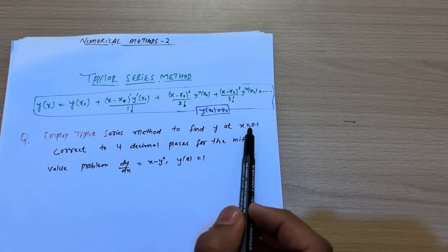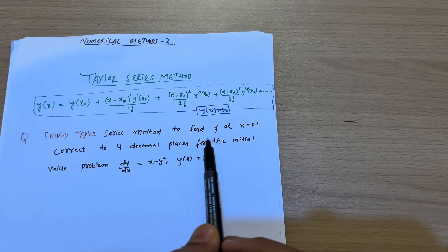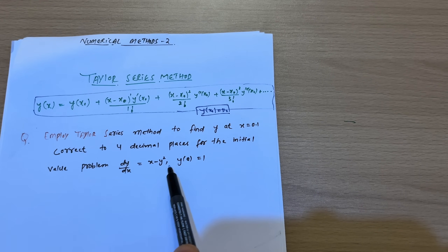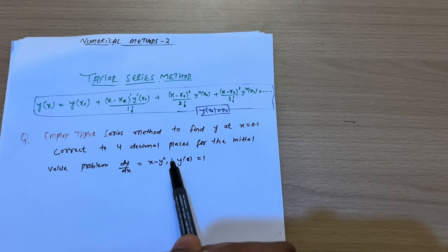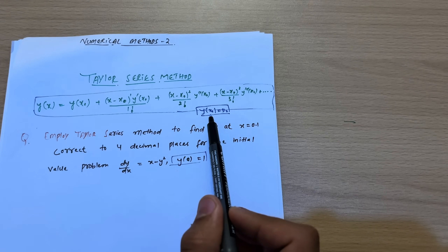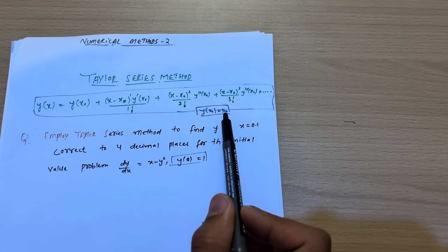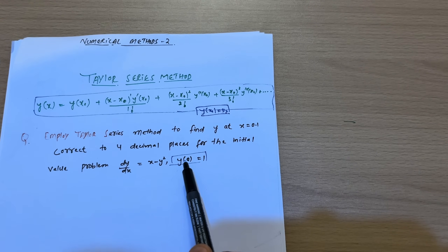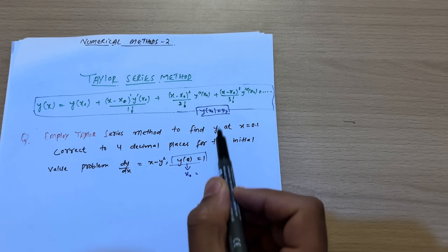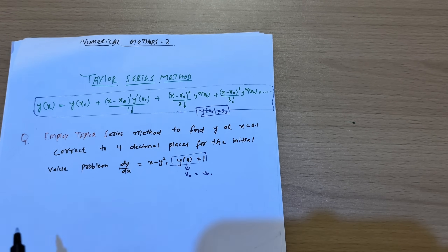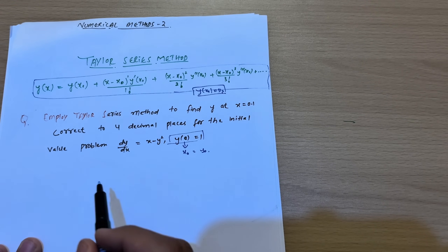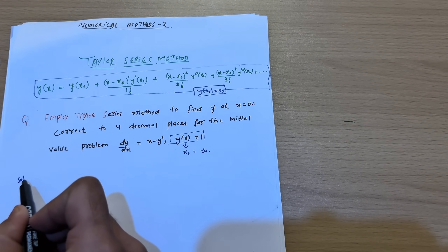The problem: employ the Taylor series method to find y at x = 0.1, correct to four decimal places, for the initial value problem dy/dx = x − y², y(0) = 1. This y(0) = 1 is the initial condition. Here x₀ = 0 and y₀ = 1. This is an easy problem — let's see the procedure.